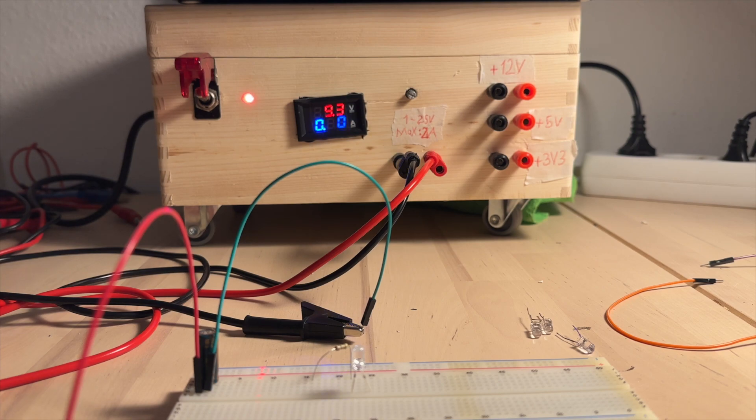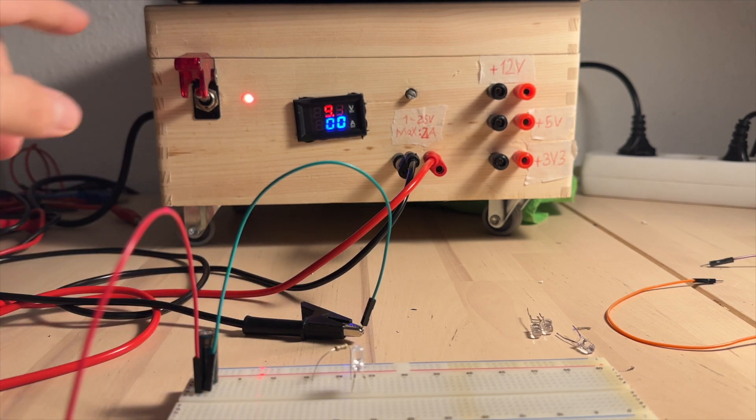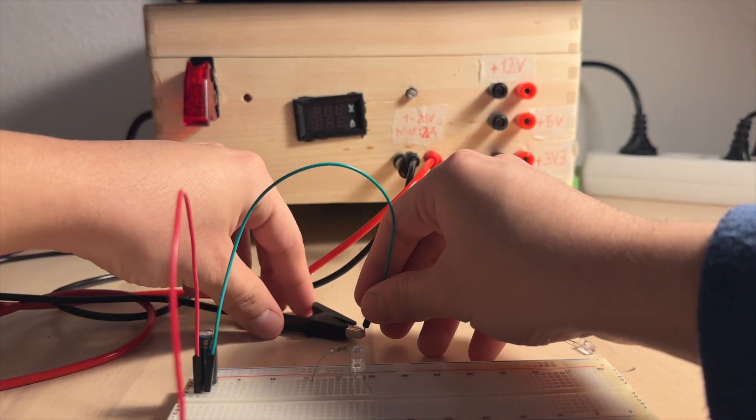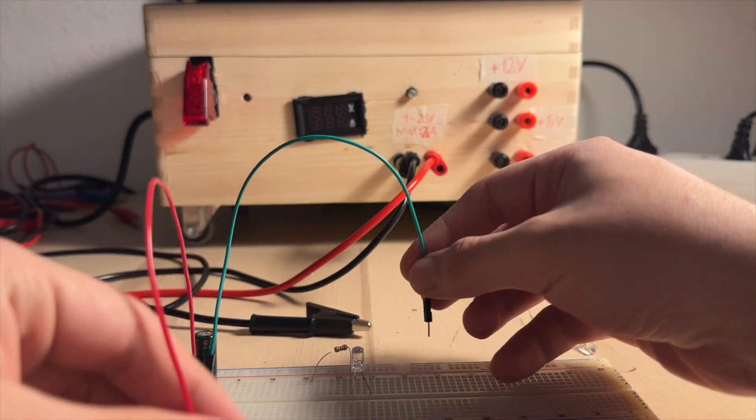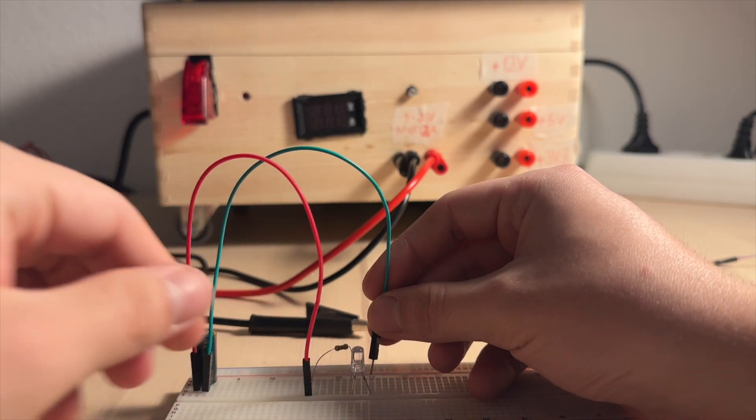Now I am charging my capacitor first. After I charge it, I connect my wires to my circuit. And as you can see, my LED turns on.